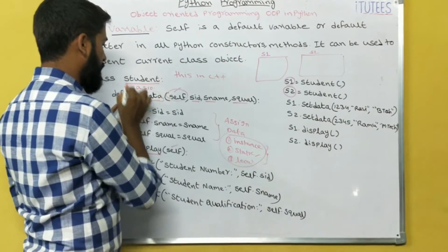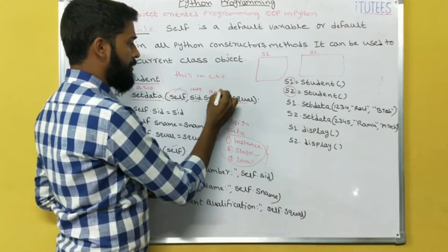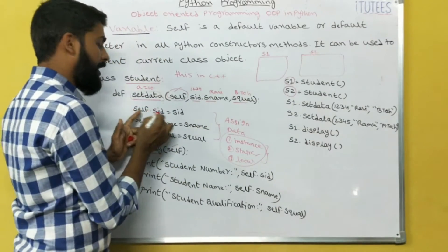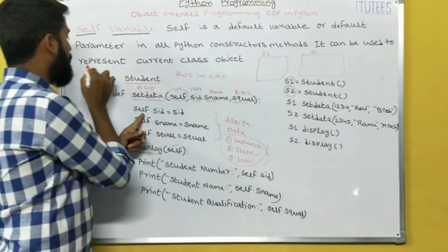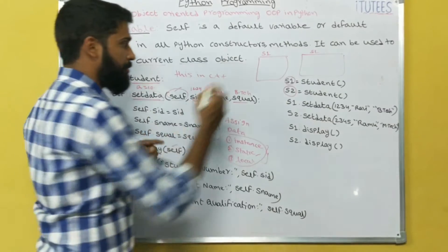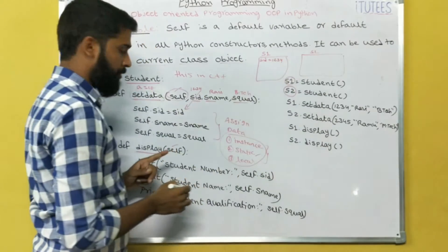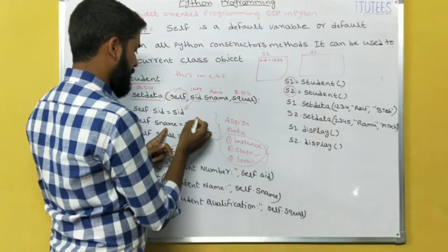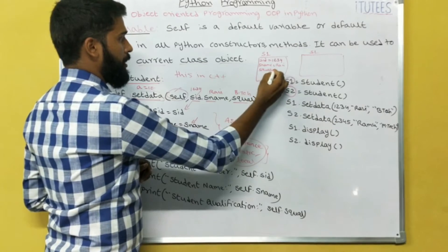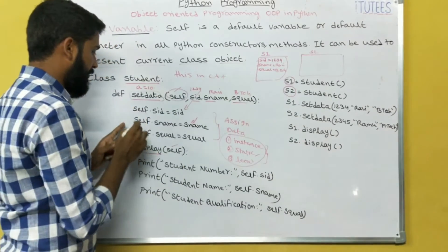When setData is invoked, the parameter SID gets 1234, S_name gets Ravi, and S_qualification gets Btech — these are local variables. Self represents the current class object, which is S1. So self.SID — that means SID is an instance variable — equals SID, which is 1234. Self.S_name equals S_name, which is Ravi. S_name equals Ravi, S_qualification equals Btech. These are the instance variables of S1, defined with the help of self inside the method.